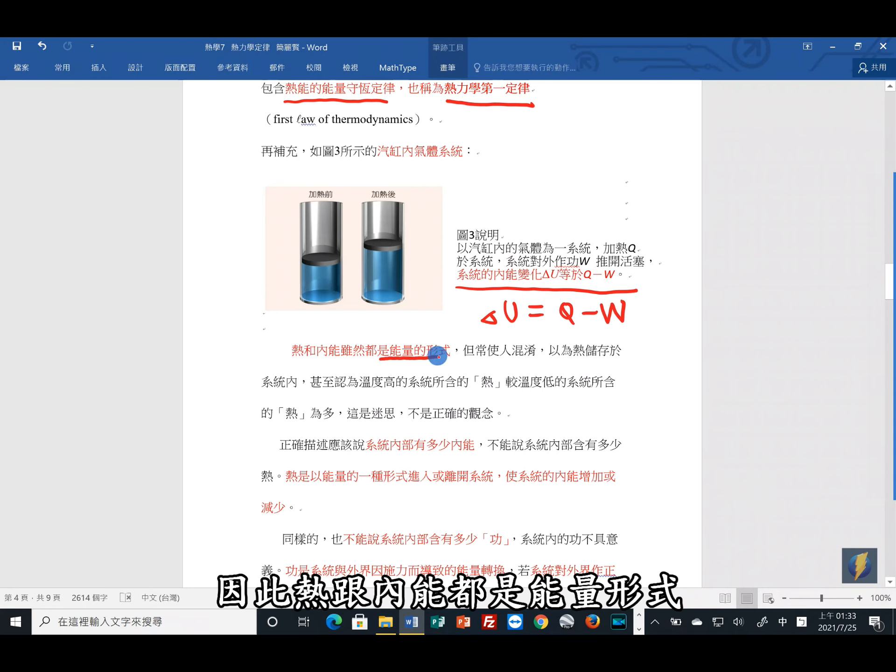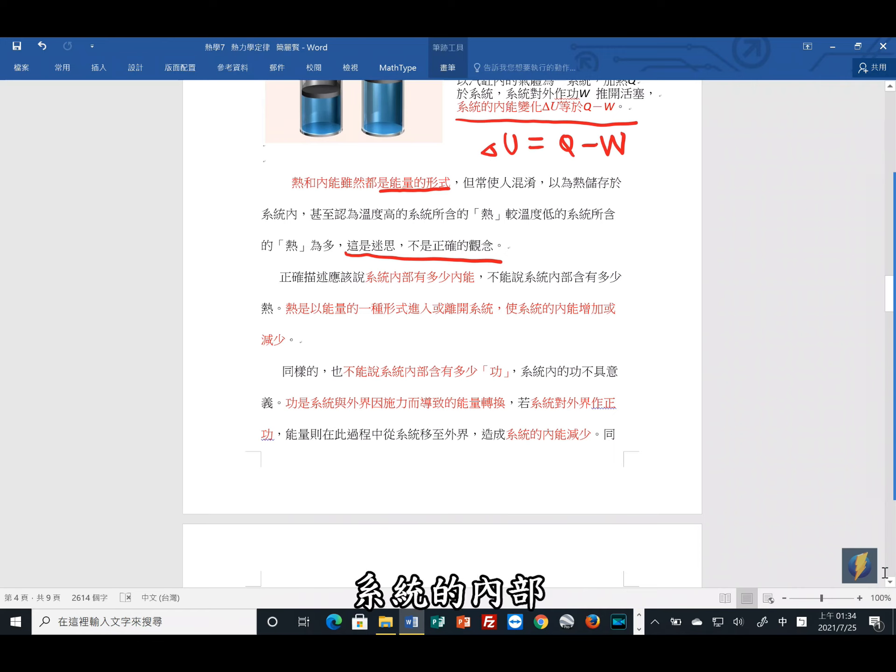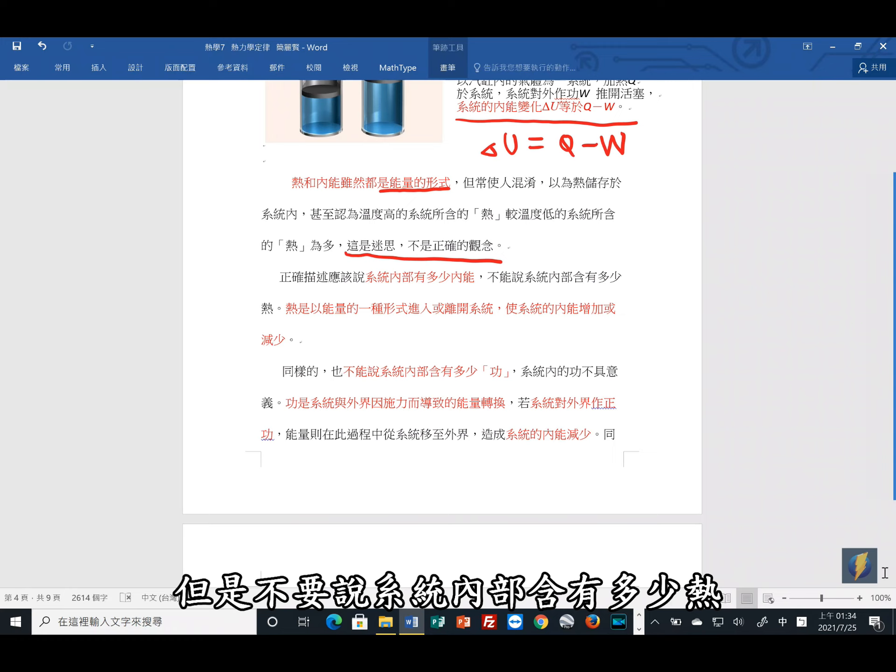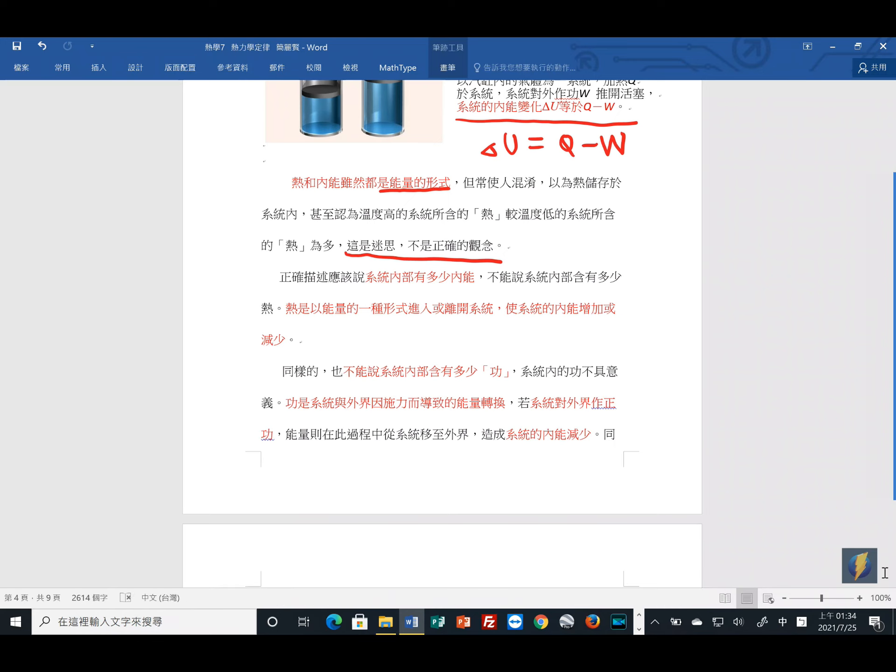因此,热跟内能都是能量的形式,但是很容易让人家混淆,以为热是储存于系统内,甚至认为温度比较高,系统的热就会比温度低的系统所含的热来得多。这是迷思,并不是正确的概念。正确的描述应该是说,系统的内部具有多少的内能。但是不要说系统内部含有多少热。热是一种能量的形式进入这个系统或离开这个系统。也就是外界输入或者是系统对外界输出,所以是系统的内能会有增加或减少的情形。